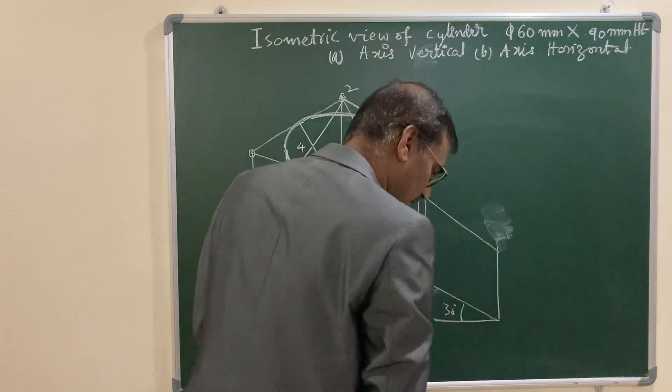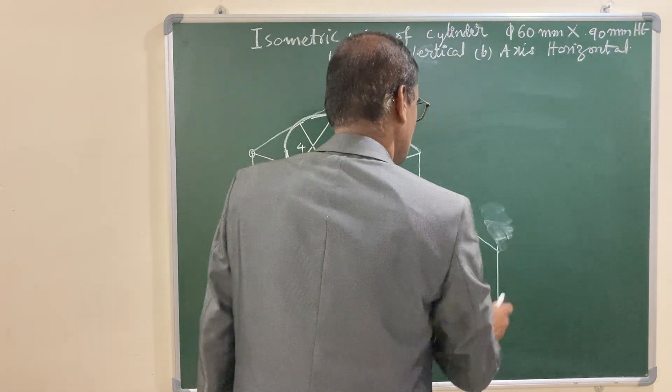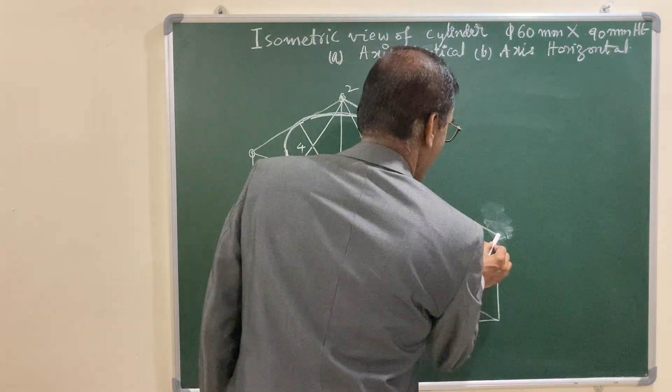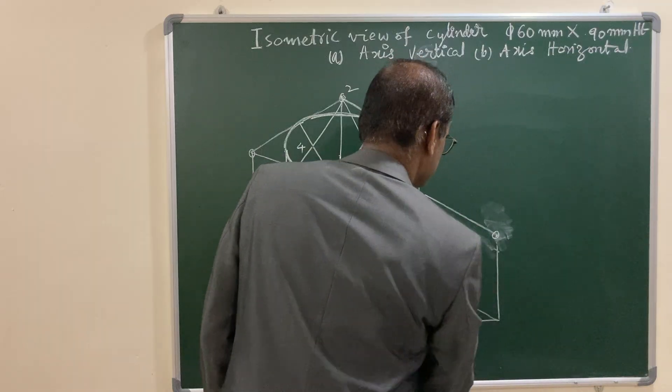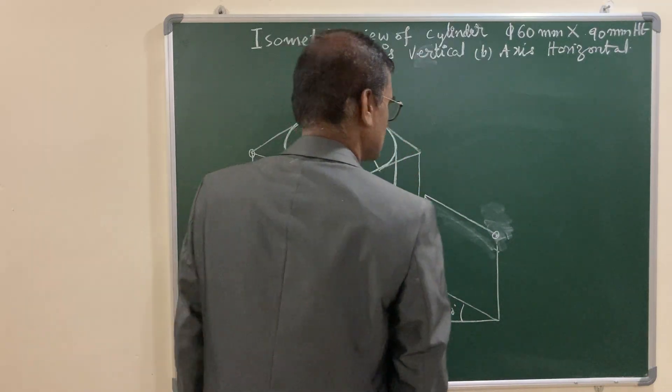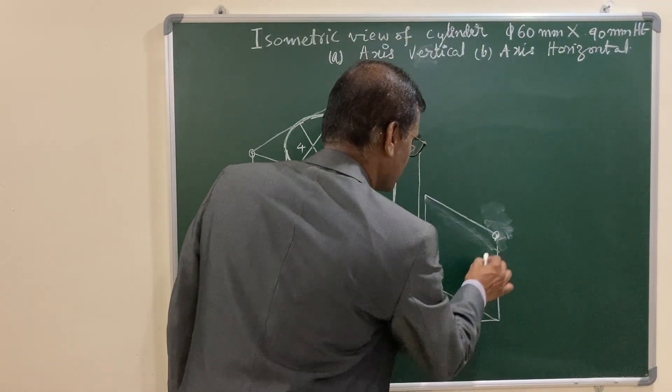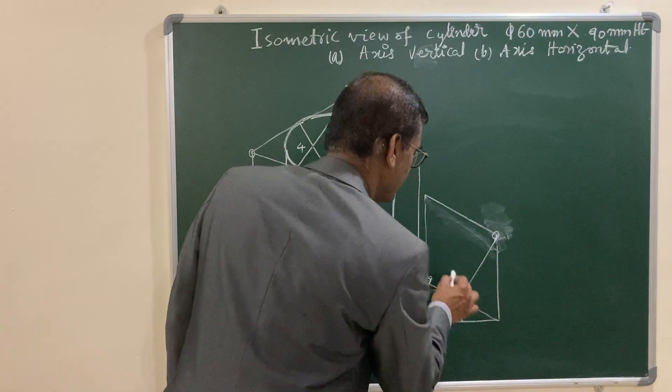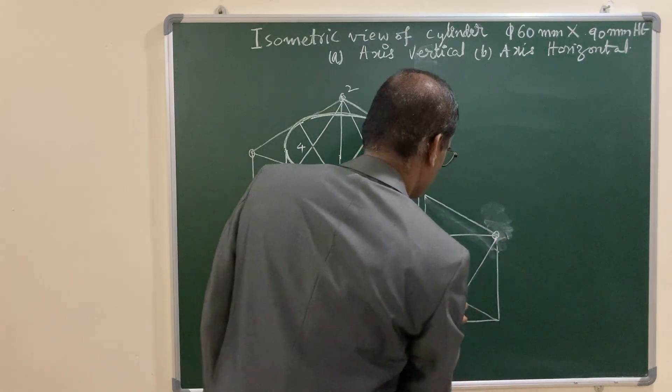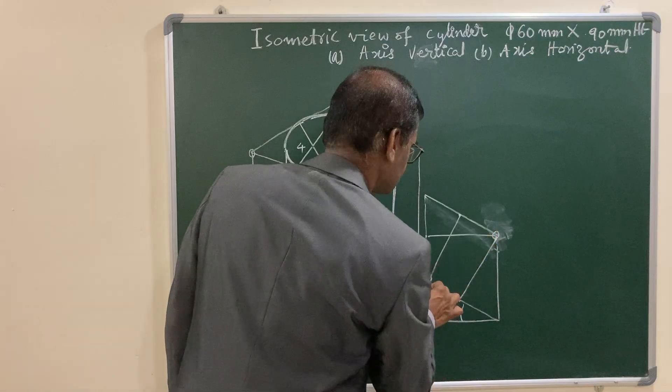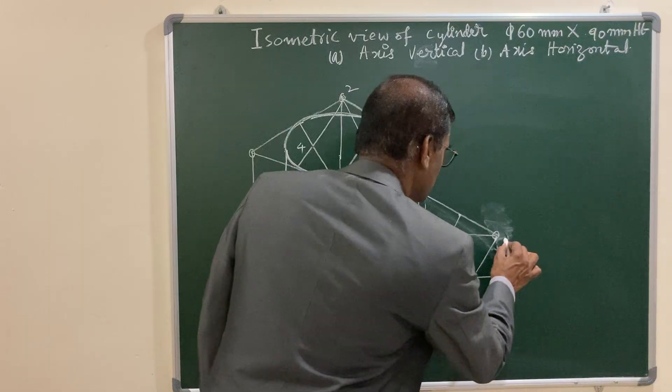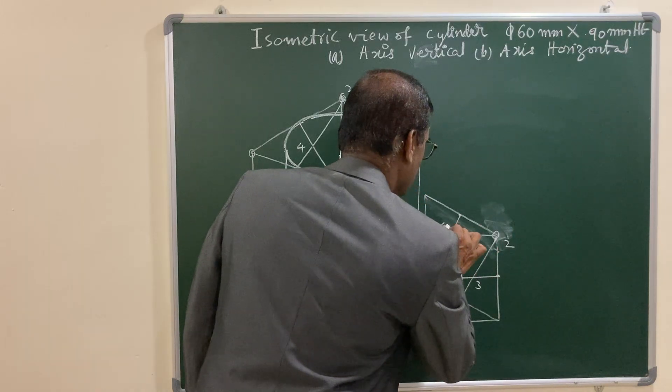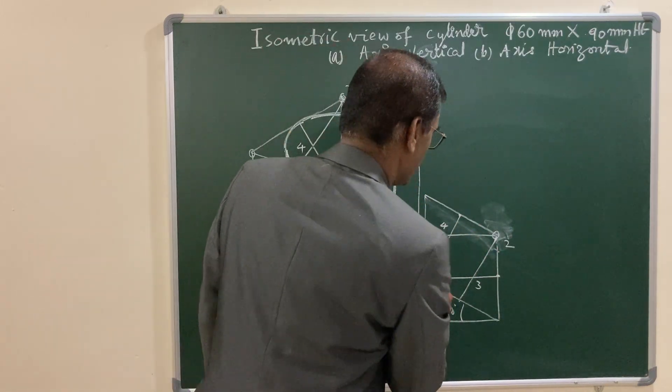Let us construct the parallelogram with the sides. This is your shorter diagonal, and join the shorter diagonal with the opposite side midpoints. You got the 4 centers. Let us mark this is 1, 2, 3 and 4.